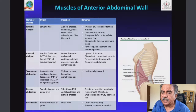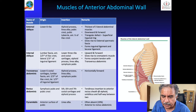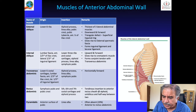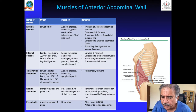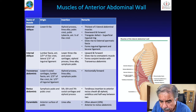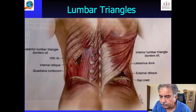As surgeons, one should know these muscles: external oblique, internal oblique, transverse abdominis, rectus abdominis, and pyramidalis. It is very important to note that the pyramidalis can be absent in approximately 20% of cases.